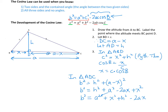Grouping the X squared plus H squared, we know from triangle ABD that X squared plus H squared equals C squared. So we substitute: B squared equals A squared plus C squared minus 2AX.